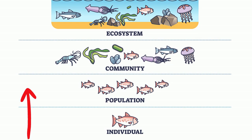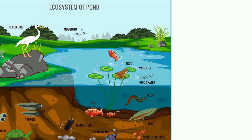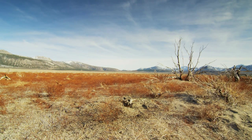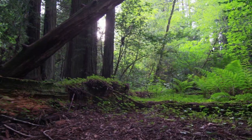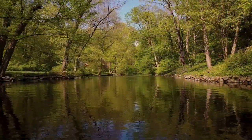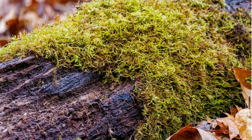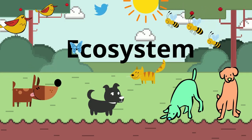The next largest organization level is an ecosystem, and it's a community of living factors called biotic factors, and non-living factors called abiotic factors, interacting and living together. This desert is an ecosystem. This forest is an ecosystem. This pond's an ecosystem, and this rotting log can even be an ecosystem. An ecosystem is a community of living and non-living objects living together in a particular area.